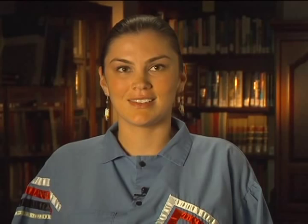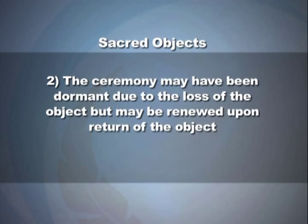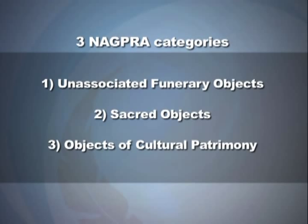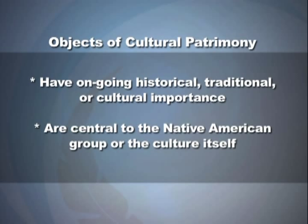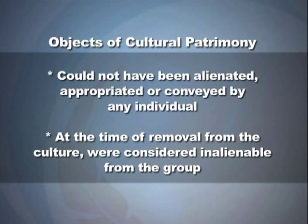The third category is objects of cultural patrimony — objects that have ongoing historical, traditional, or cultural importance, are central to the Native American group or culture itself, could not have been alienated, appropriated, or conveyed by any individual, and at the time of removal from the culture were considered inalienable from the group. For the citizens of the United States, an object of cultural patrimony would be the Liberty Bell or the Statue of Liberty. For Native American tribes, it could be any object considered of central cultural importance.